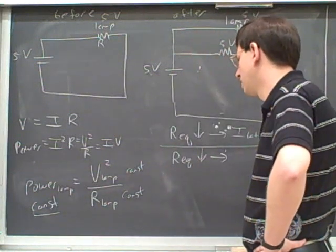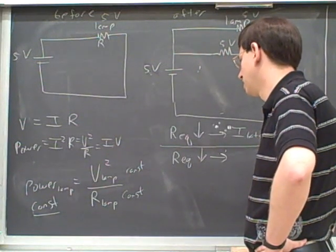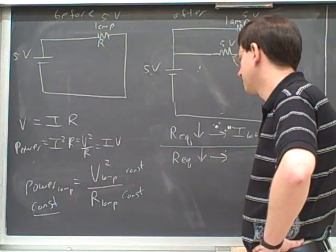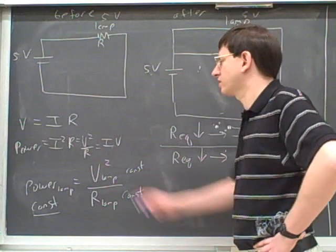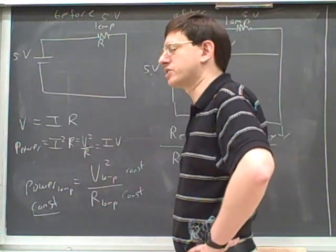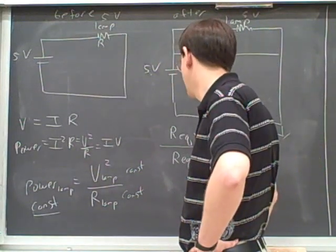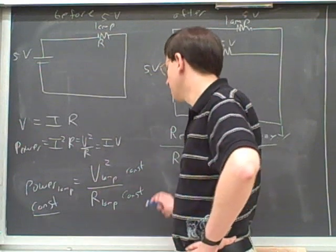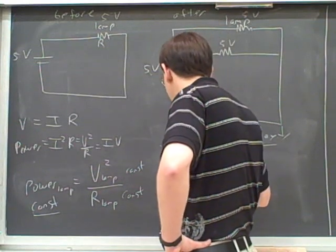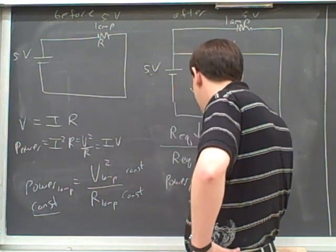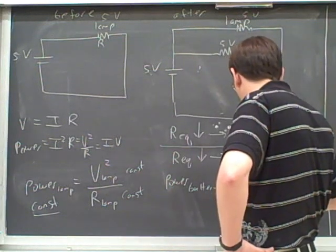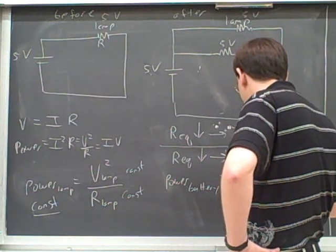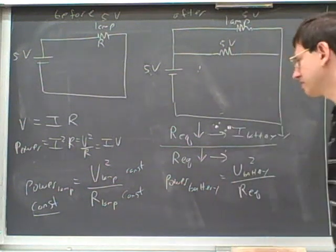Good. So then should I talk about the current? We could, but I actually think we're now ready to just pick an equation. We can already pick an equation here. Which equation should we use? The same one. That's right. We should now, however, again, now we need new subscripts. Now we're looking at the power from the battery. And that depends on the voltage from the battery over the equivalent resistance that's perceived by the battery.